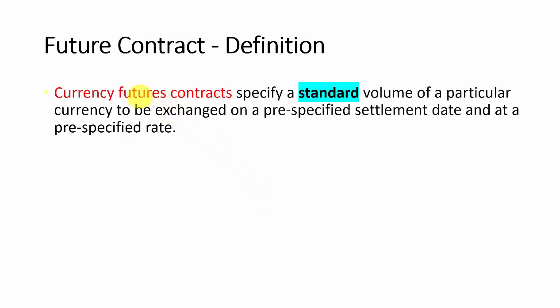Let's look at a futures contract example. First, the futures contract definition: currency futures contracts specify a standard volume of a particular currency to exchange on a specified settlement date. The keyword for a futures contract is 'standard.'